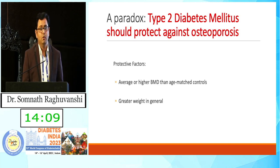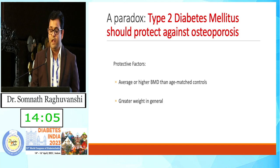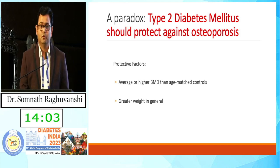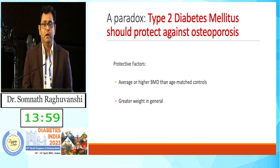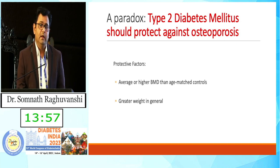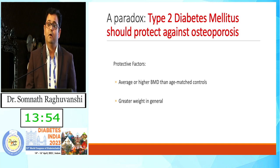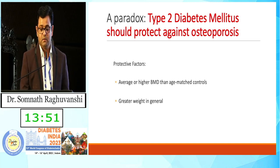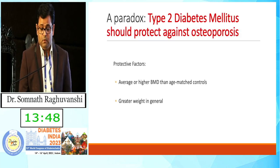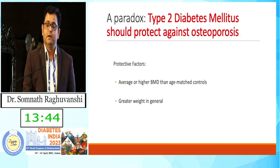As we all know, BMD is higher in patients with diabetes. Then why is osteoporotic fracture higher in diabetes? We predict that patients with type 2 diabetes have higher BMD than age-matched controls, but they also generally have greater weight. We know that obesity leads to higher BMD and protects against osteoporosis. So this is the paradox — does type 2 diabetes mellitus protect against osteoporosis? Is it true?